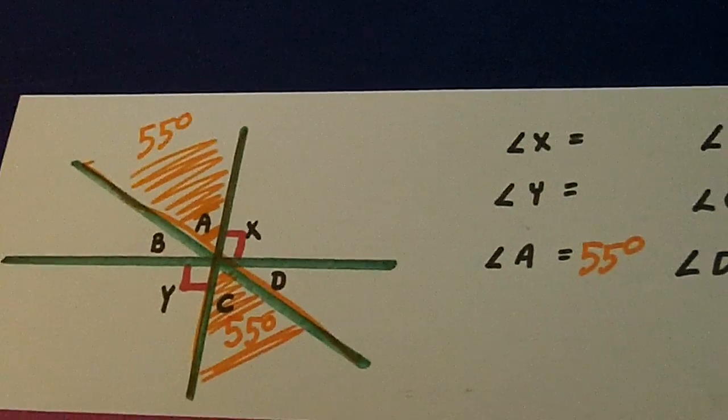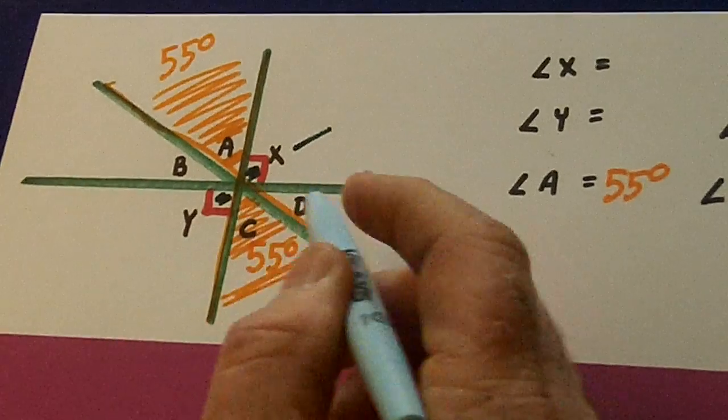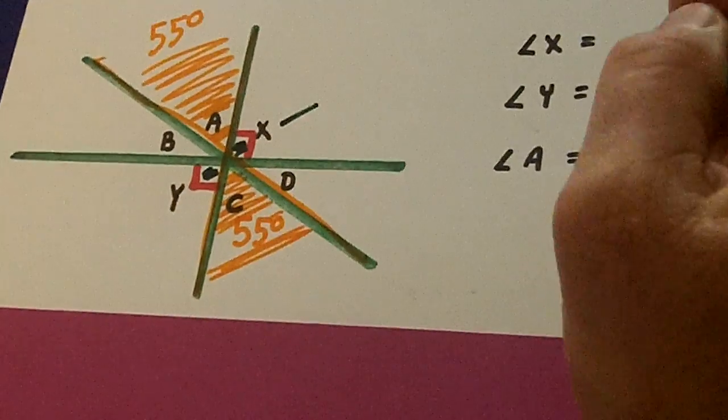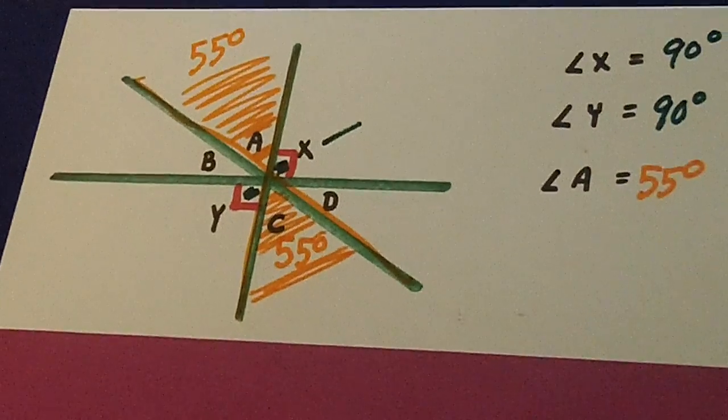Now, X's are pretty easy because they are both what? Right angle. X and Y are 90 degrees. That's easy.